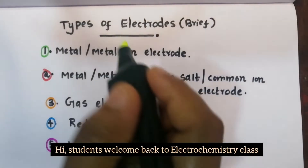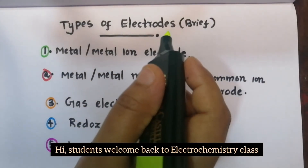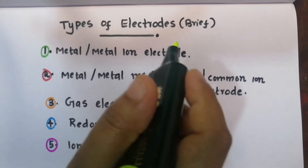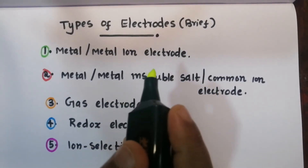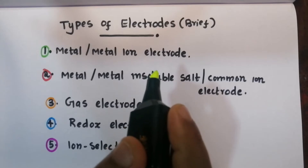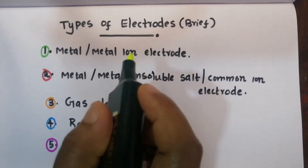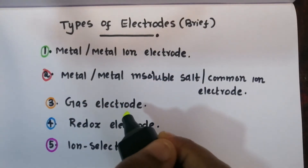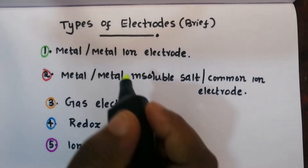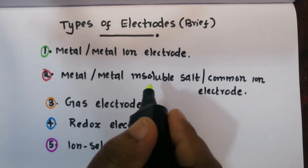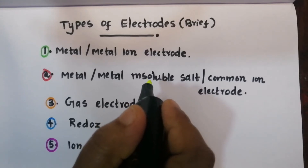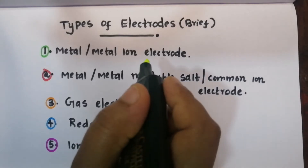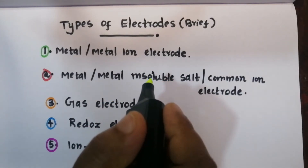Welcome to Types of Electrodes. This is a brief study. We will learn about the important definitions and different types of electrodes. In the chapter of Electrochemistry, we will learn about cells — Daniel cells and electrochemical cells — and how many types of electrodes there are.